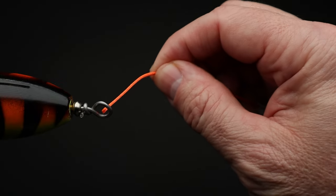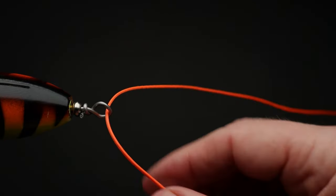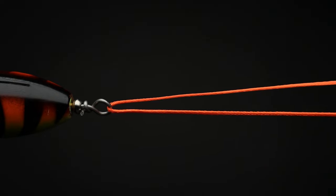Today we're going to learn how to tie an improved clinch knot. The first step is to take the end of the line and run it through the eye of your lure. Then pull through about 6 to 8 inches of line.